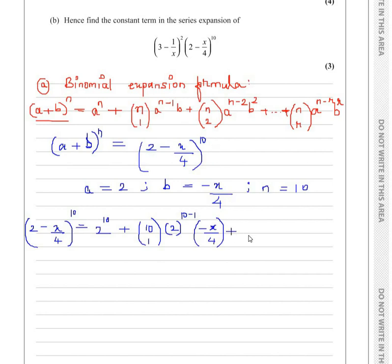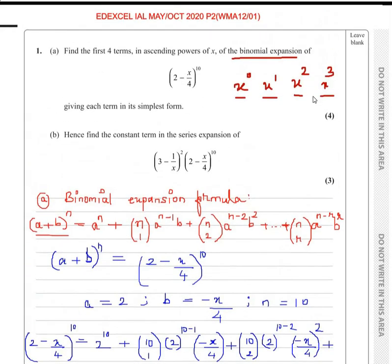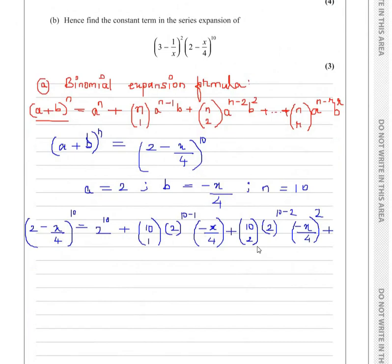Then plus nC2, so 10C2, times a to the power of n minus 2, which is 2 to the power of 8, times b squared, which is minus x over 4 squared. After this we have our first, second, and third terms, and we need one more. So we write it as 10C3, and the numbers are increasing — here it was 1, here it is 2, here it is 3.